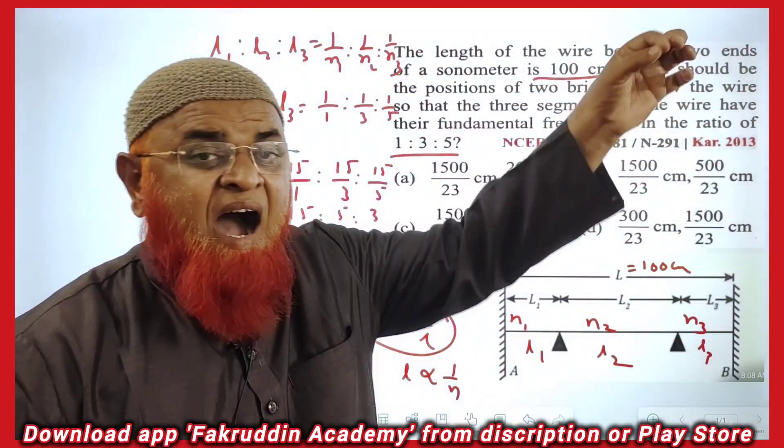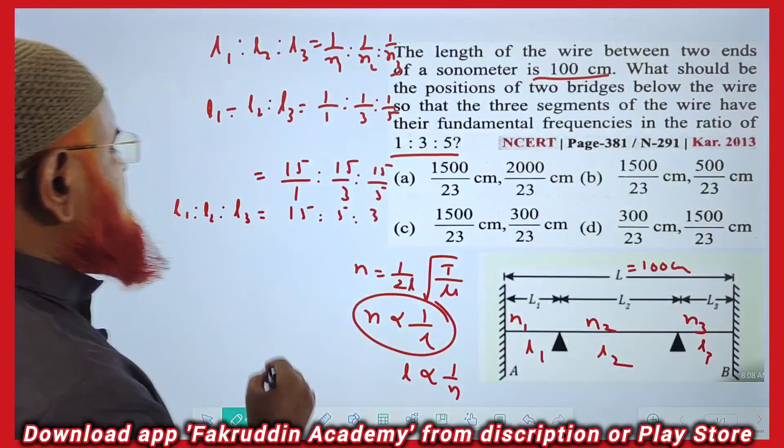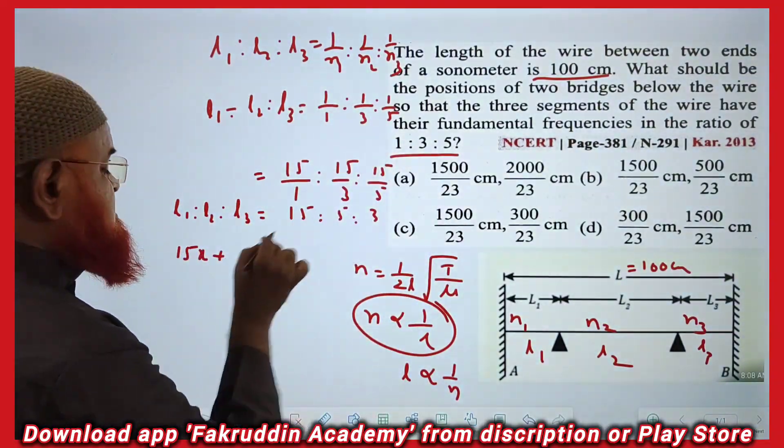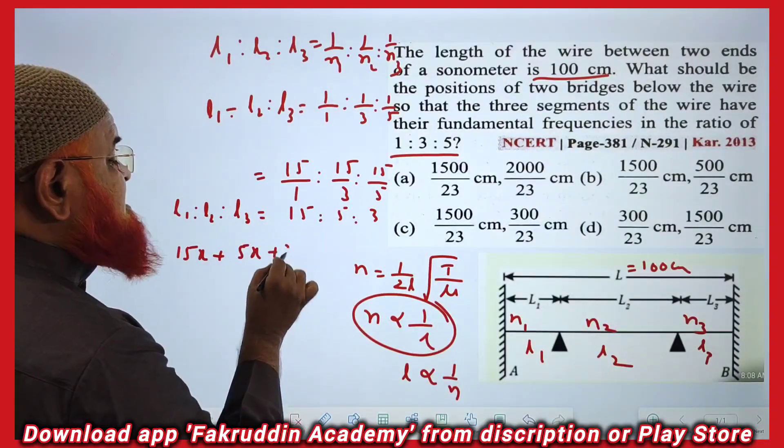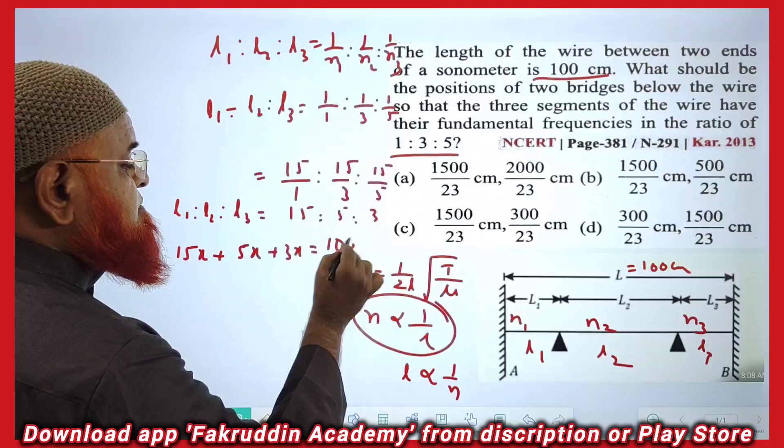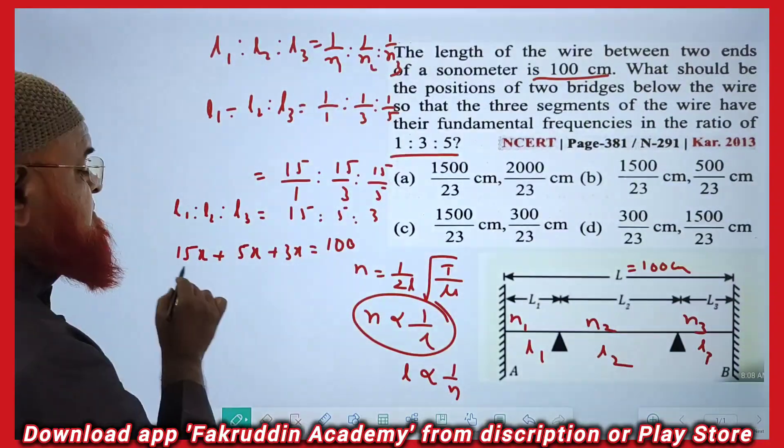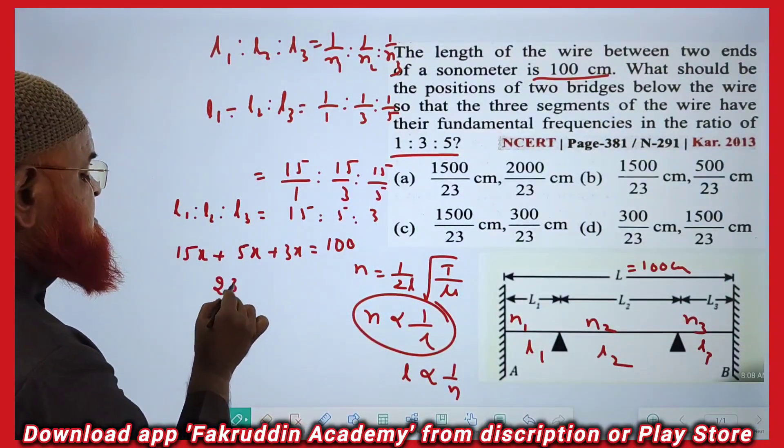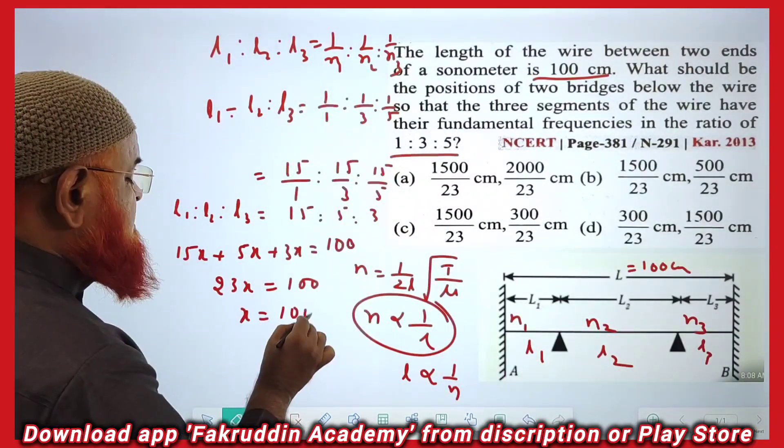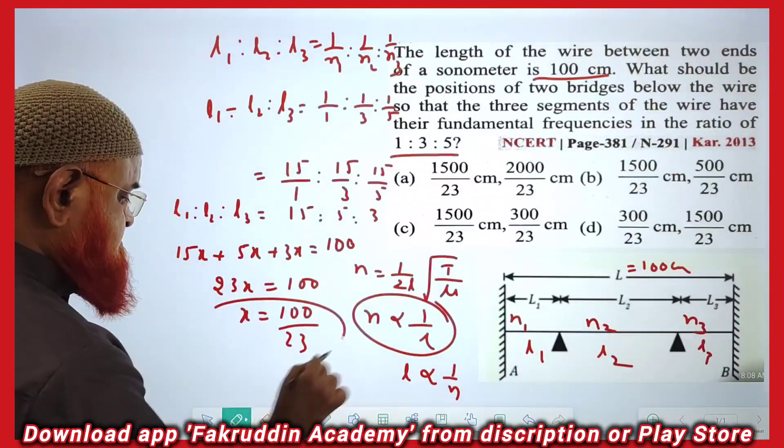It is said that the total length is 100 cm. What I am going to do now: let us take 15x + 5x + 3x = 100. From this it is understood that the total is going to be 23x = 100, so x = 100/23.